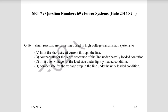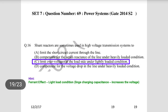Question 9: Shunt reactors are sometimes used in high voltage transmission lines. What is their purpose? As already explained, their purpose is to limit overvoltage at light load or no-load conditions. At light load, due to the capacitance effect, the receiving end voltage becomes higher than the sending end voltage — the Ferranti effect. To avoid insulation damage from this higher voltage, shunt reactors are used.